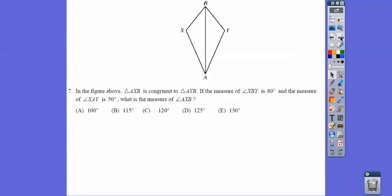All right, so here we have congruent triangles. The measure of XBY, this angle right here is 80. Since these triangles are congruent, this angle equals this angle, so that's 40 and that's 40 right there.